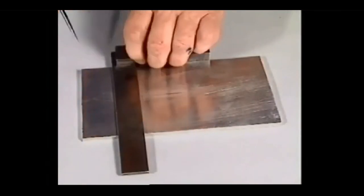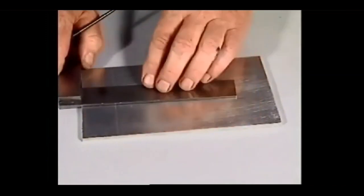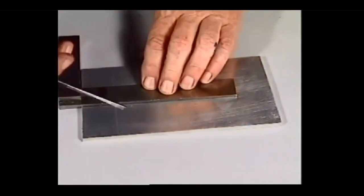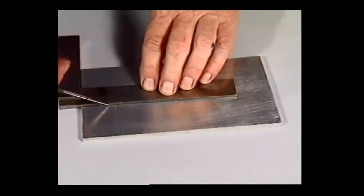This tri-square is a rectangular blade fitted at precisely 90 degrees to a solid stock. A simple idea and simple to use.